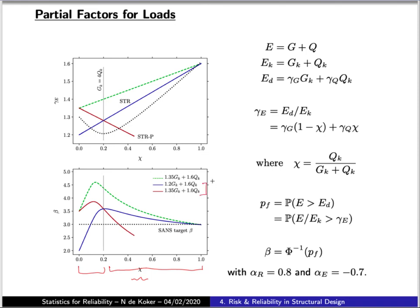The values given in SANS 10160 give you these two lines, this blue curve and this red curve. You can see that the reliability values that correspond to those two curves are still above our target value, but far more balanced and uniform across the range of chi values.